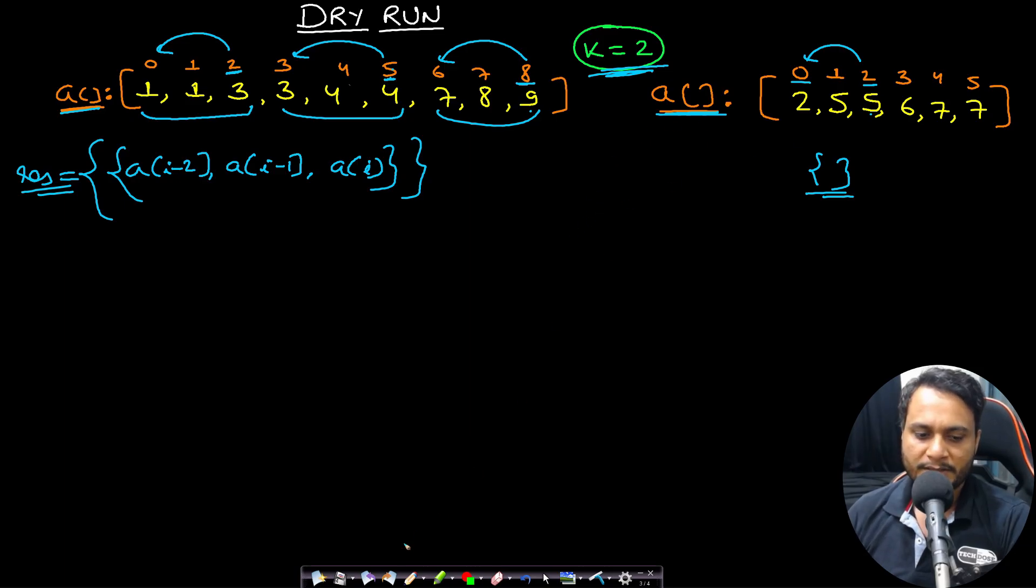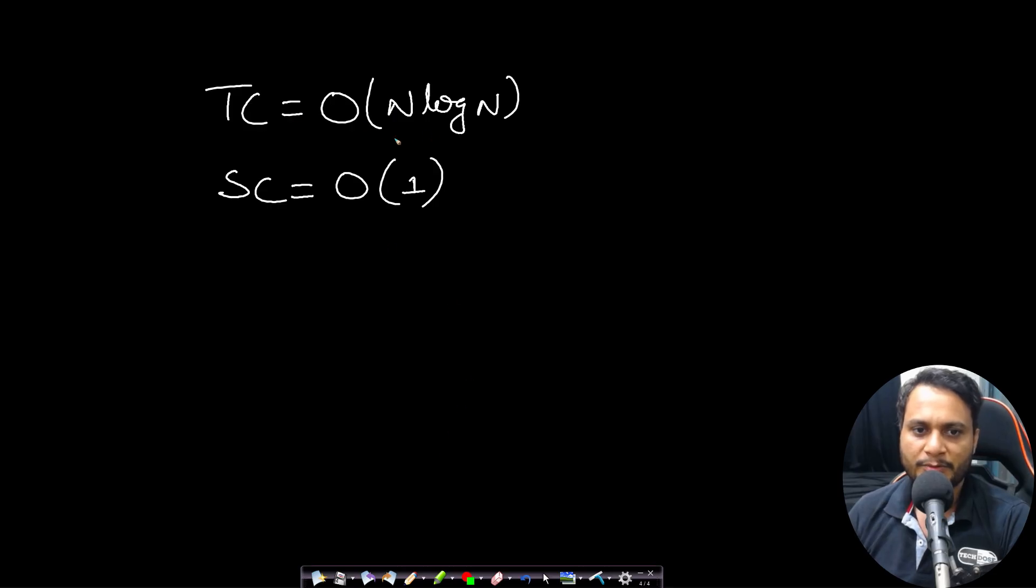I think this is clear. It is an easy level problem and the time complexity is n log n for the sorting, because after sorting it is order of n and the space complexity I will assume is order of 1, assuming that the result is not counted in the space, otherwise you can take order of n as the space. So I hope this is clear, let's now look at the code.